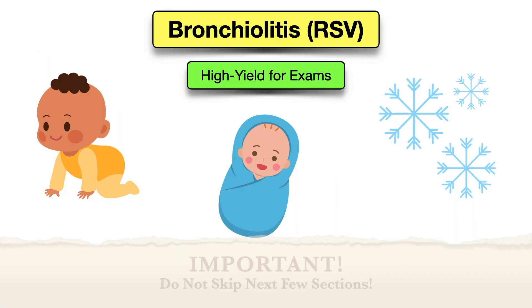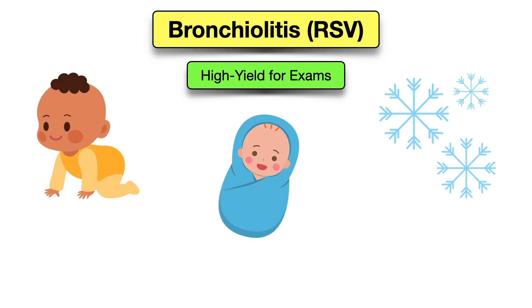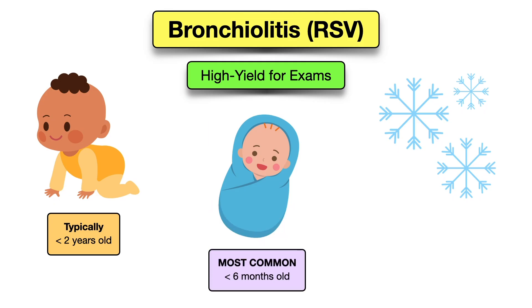Now let's talk about what you need to know about bronchiolitis for exams — this is high yield, so make sure to keep watching. Starting with who gets bronchiolitis: it typically occurs in children less than two years old, and it's most common in infants less than six months old. It is most common in the winter months — it appears in the fall but typically peaks in winter.